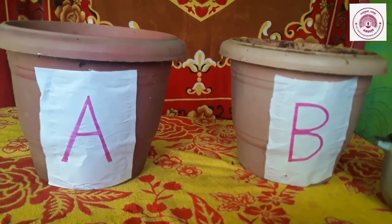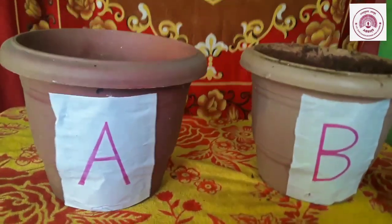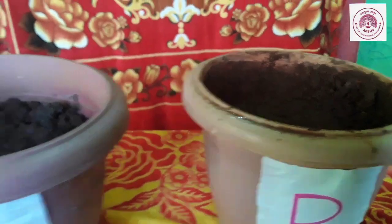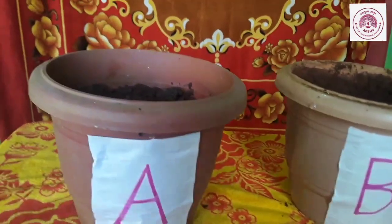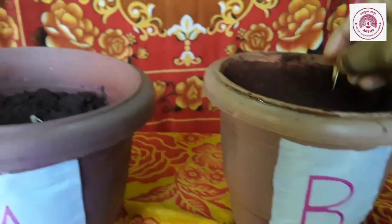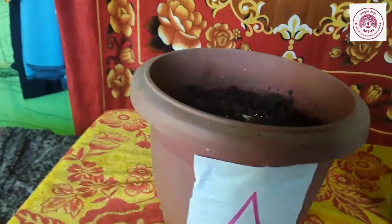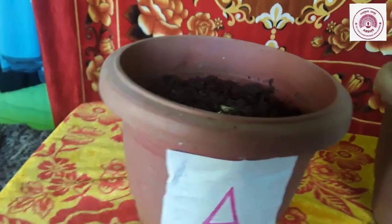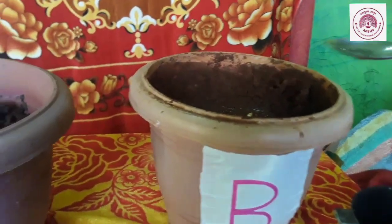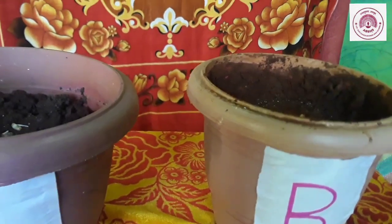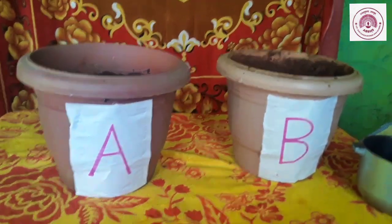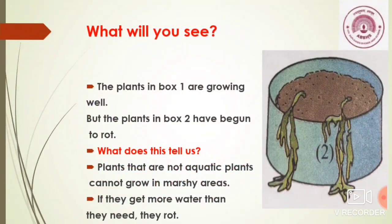Here we have taken two pots. For the first pot, we have labelled it A, and for the second pot, we have labelled it B. We have filled each pot with three-quarters of soil, moist enough to sow the seeds. Sow two sprouts of moth — mutki seeds — in each pot. Give two spoons of water to pot A once a day, and four spoons of water to pot B four times a day. Do this for six days. What will you see? The plant in box 1 is growing well, but the plant in box 2 has begun to rot. Plants that are not aquatic cannot grow in marshy areas — if they get more water than they need, they rot.